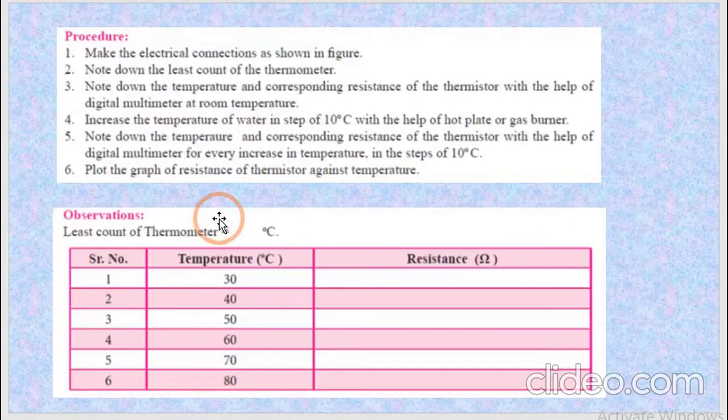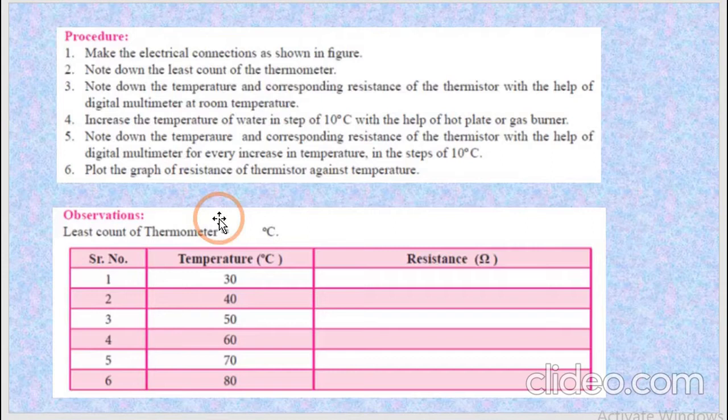What we are going to do exactly during the process of this experiment? We are going to connect all diagrammatic instruments in the form of electrical connection. Then we require the least count of thermometer. Then we have to note down the temperature and corresponding resistance of the thermistor with the help of digital multimeter at room temperature compulsory.